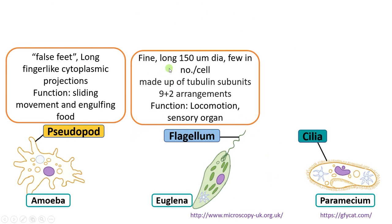Flagella are fine, long structures, about 150 micrometers in diameter, often few in number per cell — less than 10. They are made up of microtubules in a nine plus two arrangement. The primary function is locomotion; flagella also serve as a sensory organ, helping movement of organisms towards chemical attractants or light.